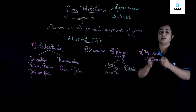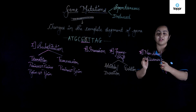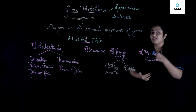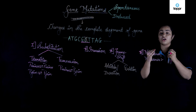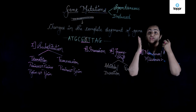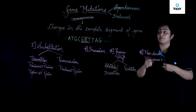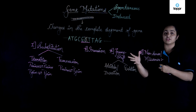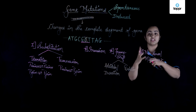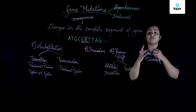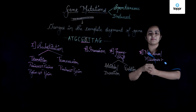This was all about the concept of gene mutations in organisms. In the next lesson, we'll talk about several types of genetic disorders — whether chromosomal mutations or gene mutations — and the disorders found in humans on a large scale. Thank you so much.